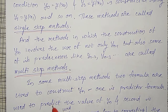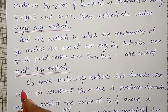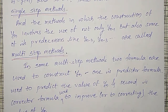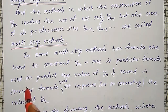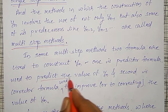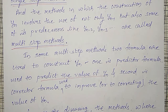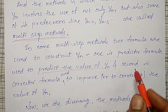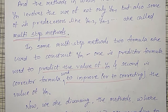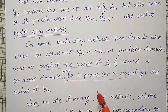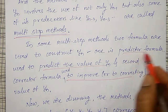For example, to find y4 we use y3, y2, y1 — four previous values — such methods are known as multi-step methods. In some multi-step methods, two formulas are used to construct yn. One is a predictor formula, used to initially predict the value of yn, giving an approximate value. The second formula is the corrector formula, used to improve or correct that predicted value of yn. So two formulas are used: predictor formula and corrector formula.